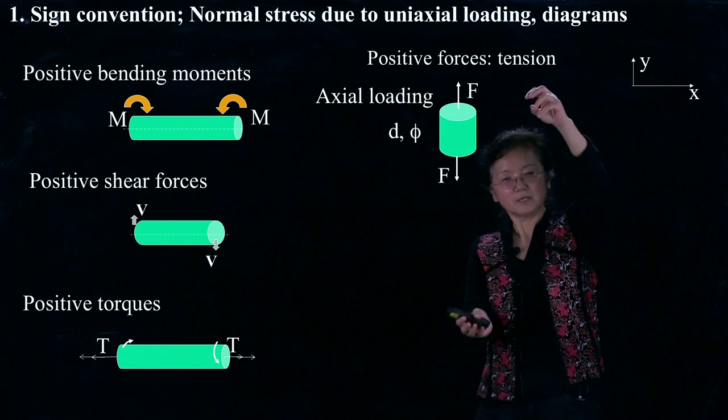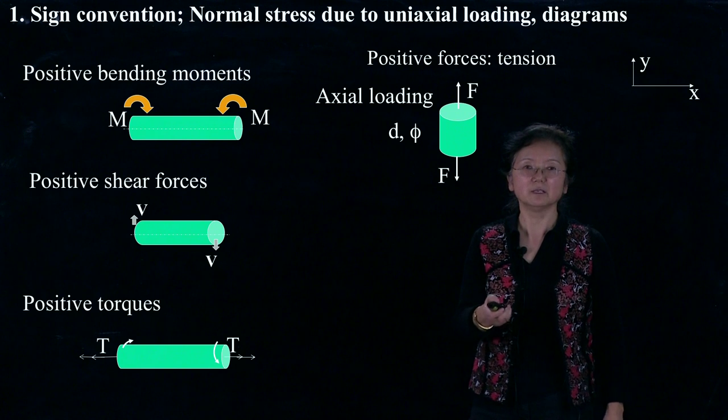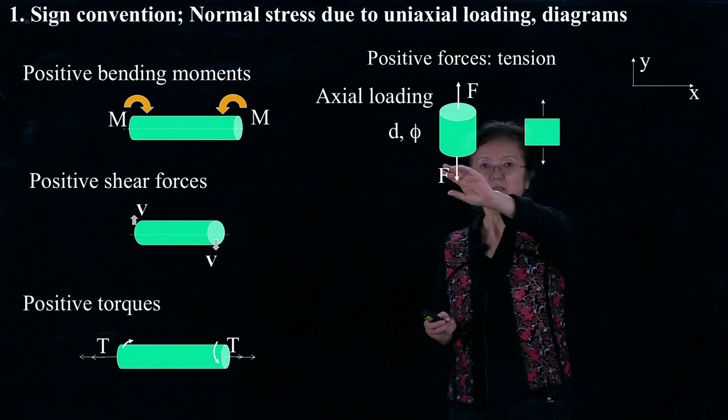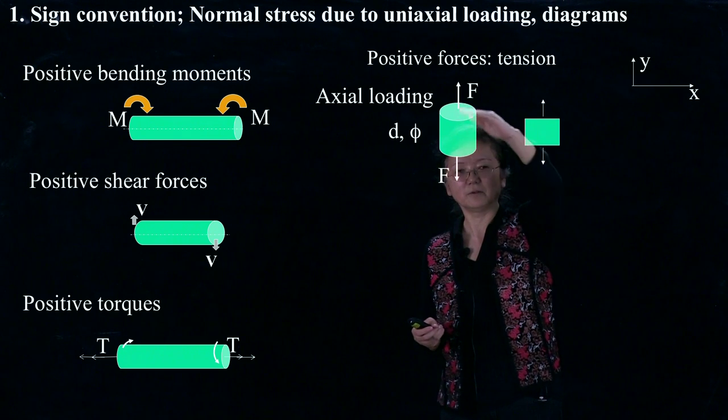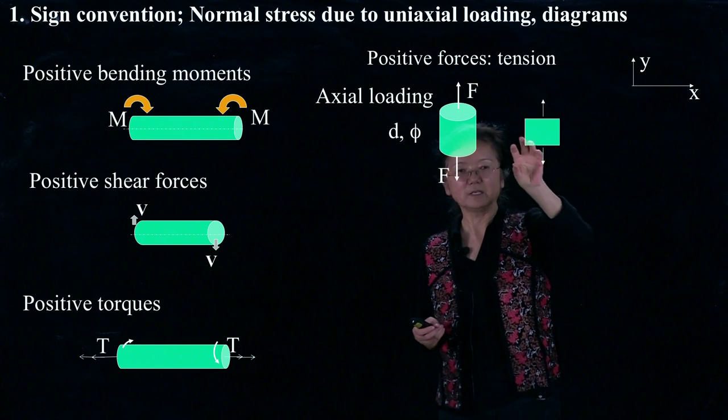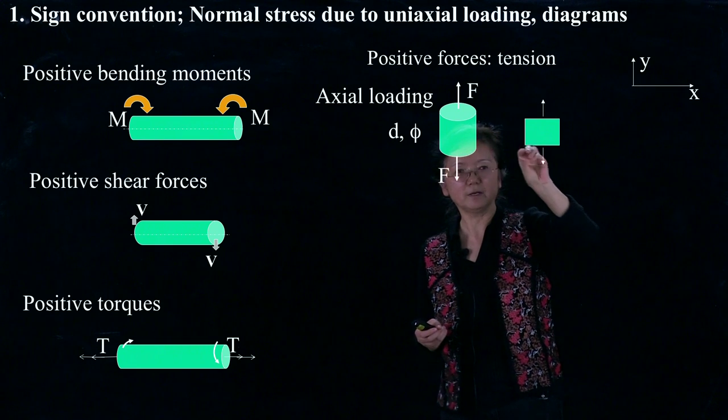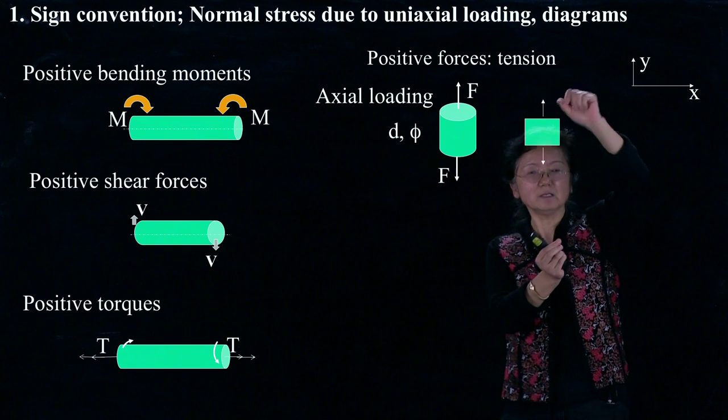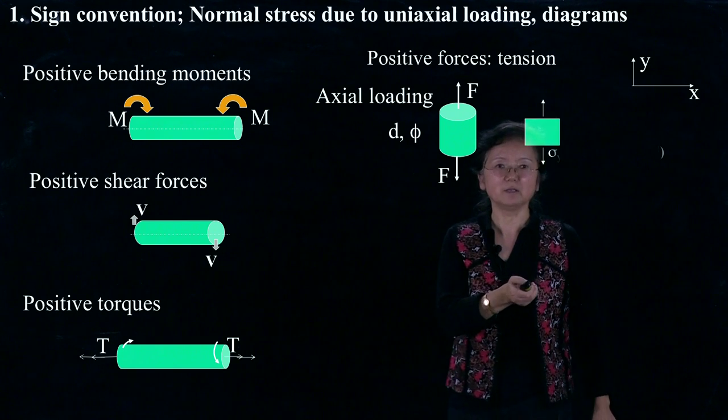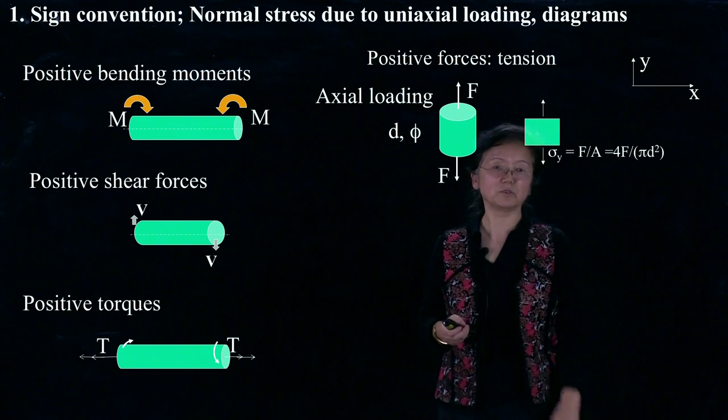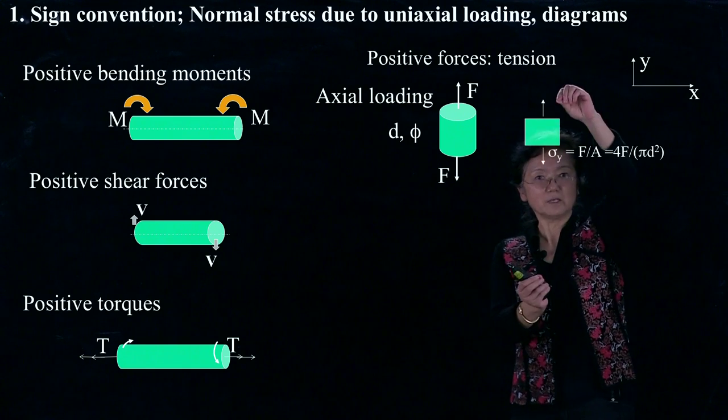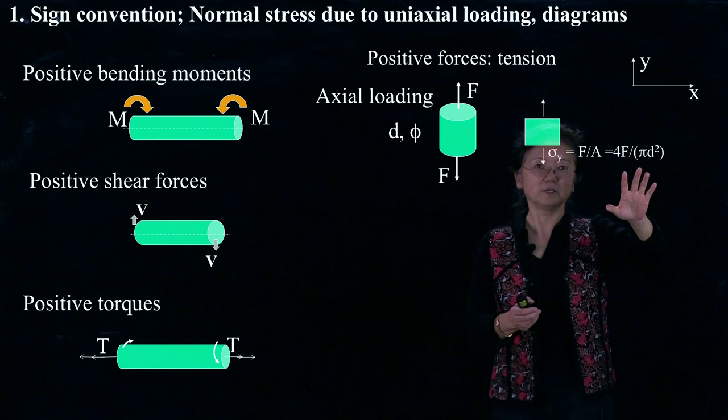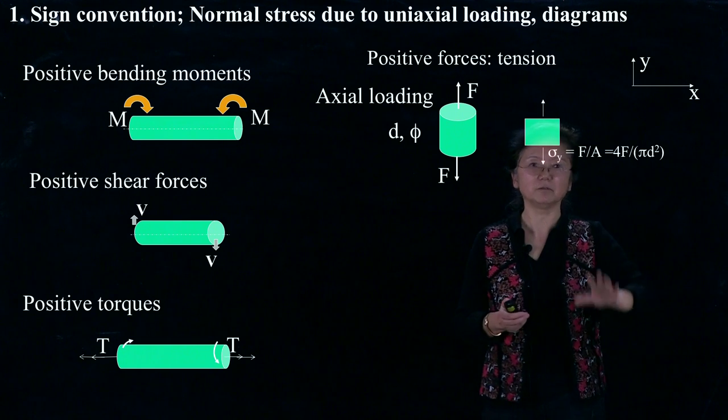For this uniaxial loading case, we can analyze the stress really quickly. As long as farther away from the loading application, we pick up a cubic element out. We have only normal stress along the y direction, and the stress can be calculated very easily. In the y direction, we call that sigma y equals force divided by area. And what is the area? Pi D squared divided by 4. That's it.